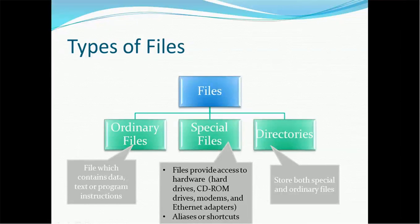There are various types of files available in UNIX environments, which are broadly classified into three categories. First is called ordinary files, second is special files, and third is directories.